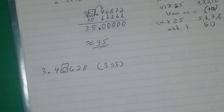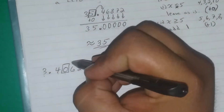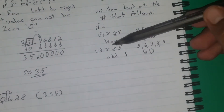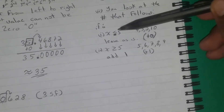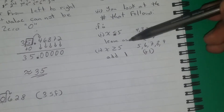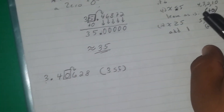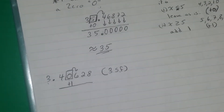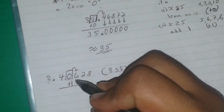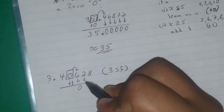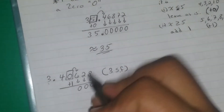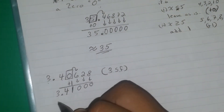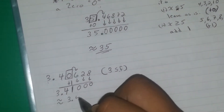So my third significant figure is the 0, which means I will be approximating that 0. Look at the number that follows — it is 6. Since 6 is greater than or equal to 5, we add 1. All the numbers that follow become 0. 0 plus 1 gives me 1. Bring down the 4 and bring down the 3. So my answer is approximately 3.41.